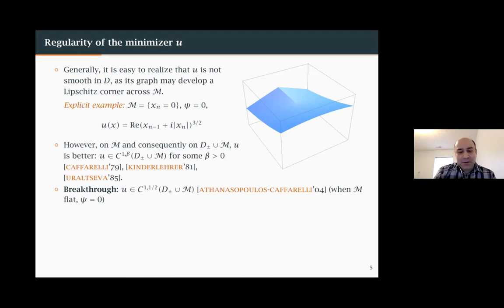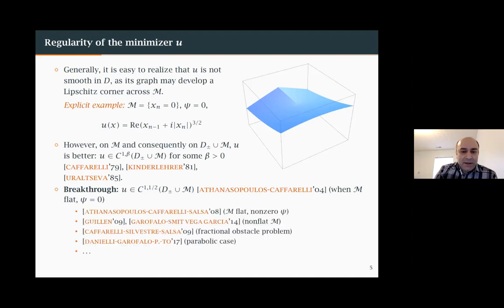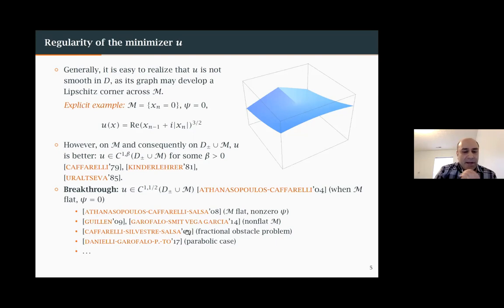There was a breakthrough when Athanasopoulos and Caffarelli proved that the minimizers are actually C^{1,1/2} on each side. That started a series of works. The original result was when the thin space was flat and C was zero, but this was generalized to non-zero obstacles, non-flat thin spaces, the parabolic problem, and the fractional obstacle problem.